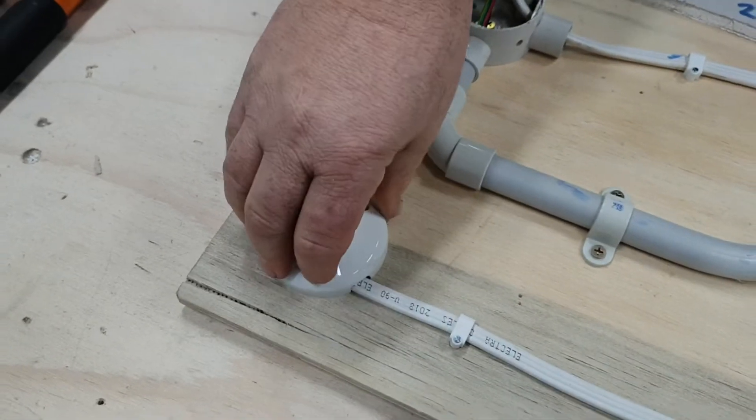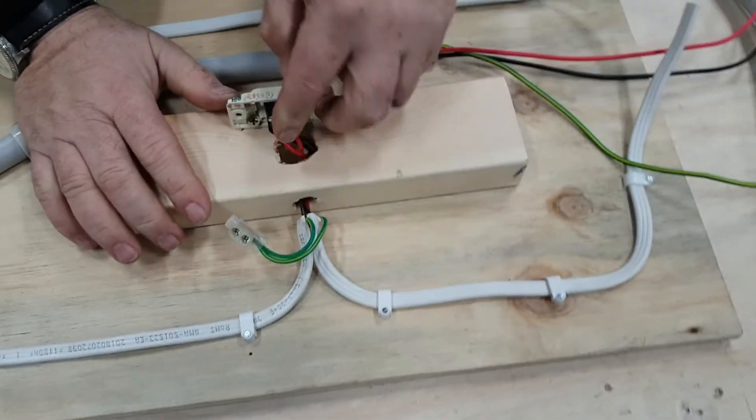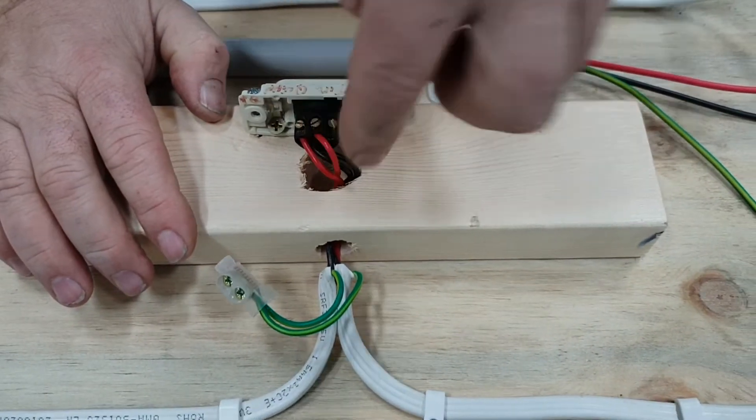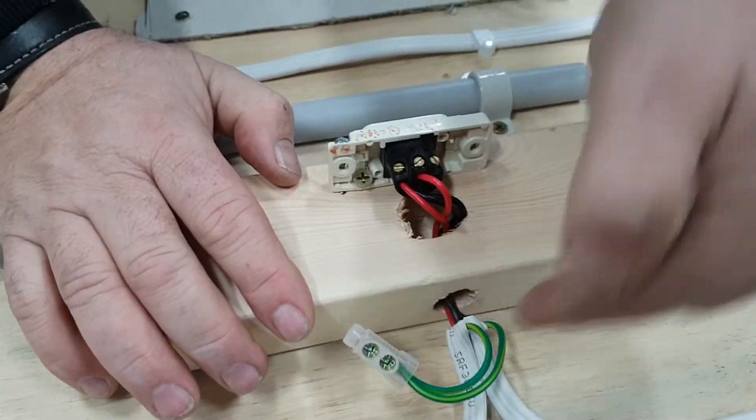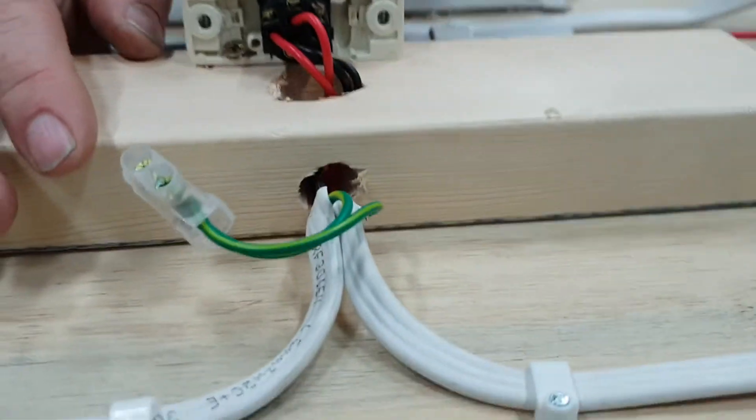Batten holder, we fix that off, screw that on. When we do this, we get a 20 mil spade bit and drill down, then we put a 10 mil drill bit on the side to open it up, and then we can bring our wires through. This is like an architrave switch.